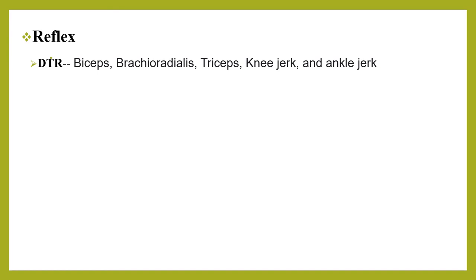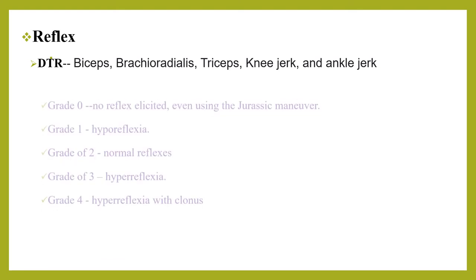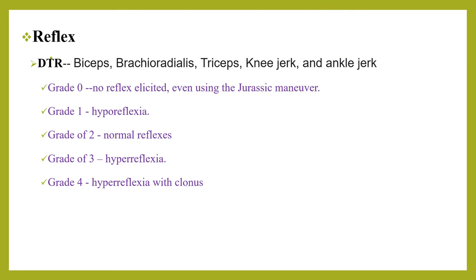The knee tendon reflex tests L3–L4 by tapping below the patella, noting contraction of the thigh muscle and forward jerk. The ankle reflex tests S1–S2 by striking the Achilles tendon, causing calf contraction and downward jerk of the foot. Deep tendon reflexes are graded zero to four: 0 is absent, 1 is depressed, 2 is normal, 3 is hyperactive, 4 is hyperactive with clonus. If absent, apply reinforcement using Jendrassik's maneuver — isometric contraction of the hands against each other.